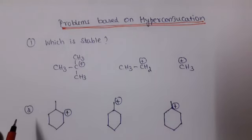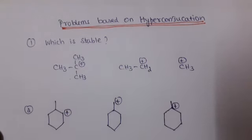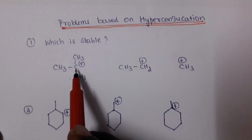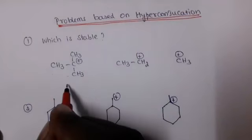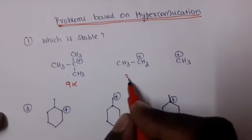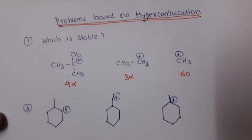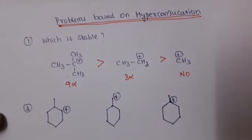Now let us answer exam questions based on hyperconjugation. We have three carbocations and want to find which compound is more stable. In the first compound, there are three Alpha Carbons, each with three Hydrogens, giving nine Alpha Hydrogens total. The second compound has three Alpha Hydrogens, and the third has no Alpha Hydrogens because the Hydrogen is attached to the Carbocation itself. More Alpha Hydrogens means more stability, so the first compound is more stable than the second, which is more stable than the third.